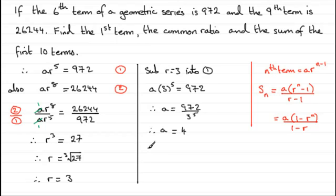So if we're looking for the sum of the first 10 terms, I'm just going to write s10, and we've got a, the first term, which is 4, times the common ratio, 3 to the power n, so that would be 3 to the power 10 in this example, minus 1, all divided by 3 minus 1.